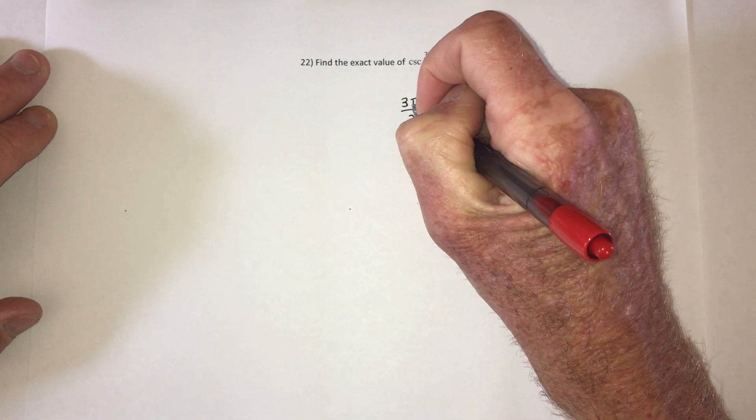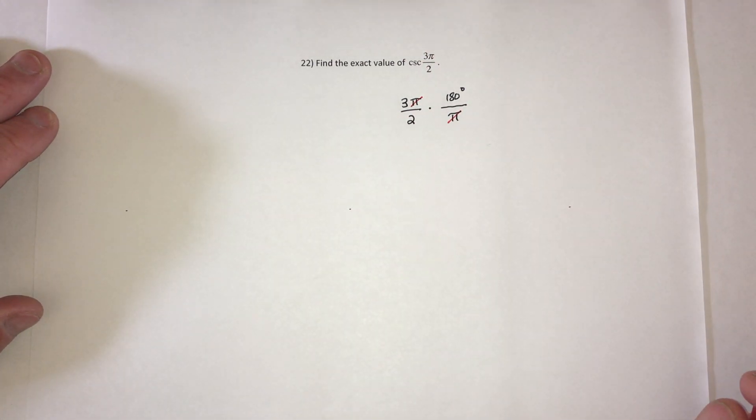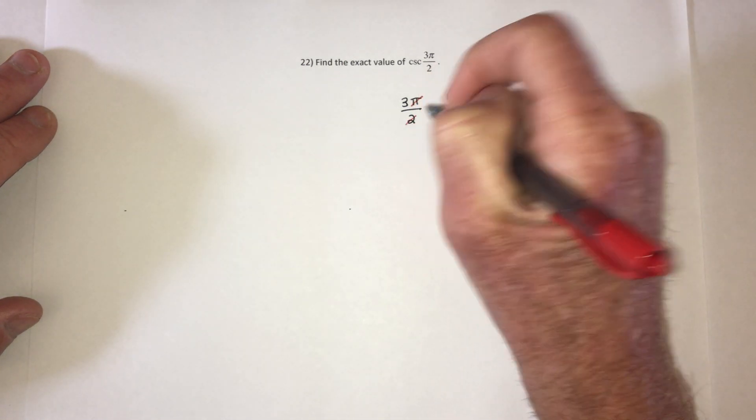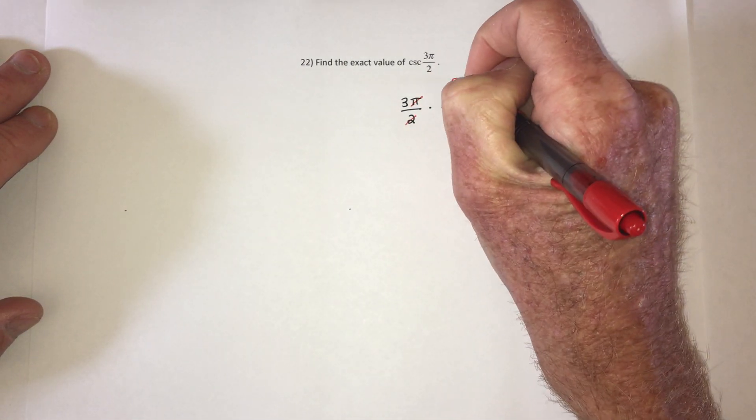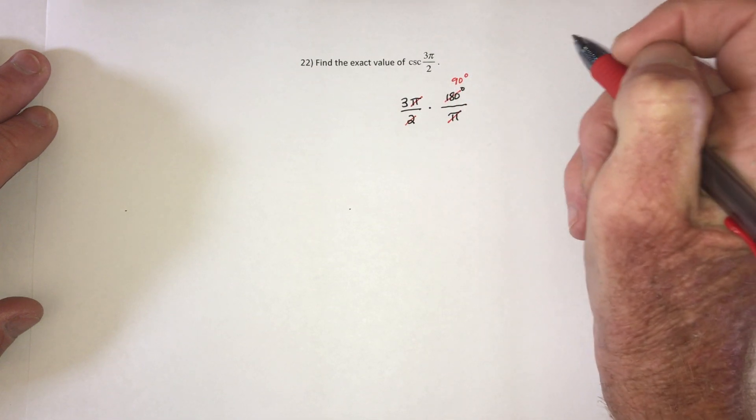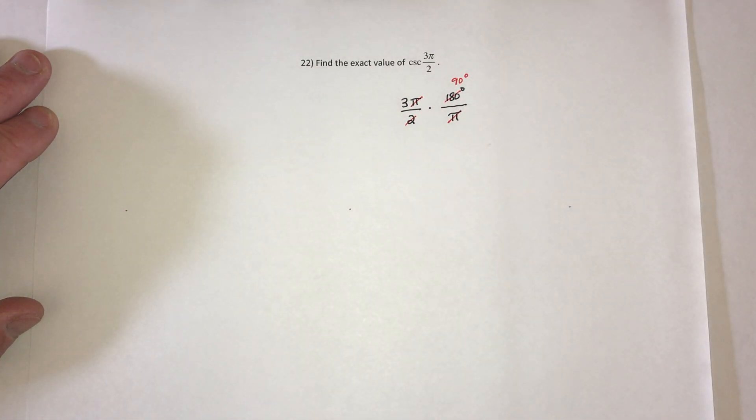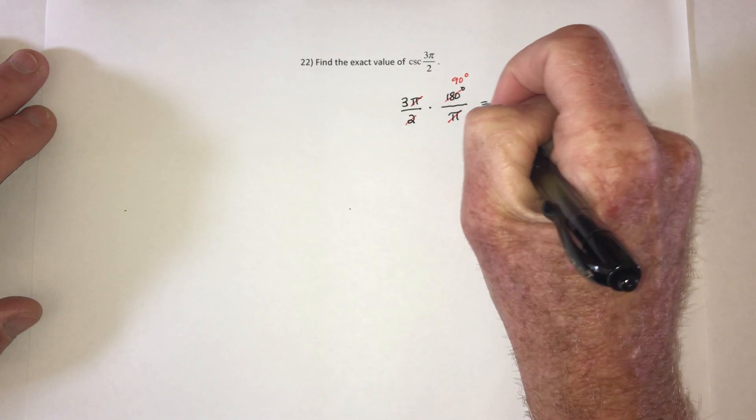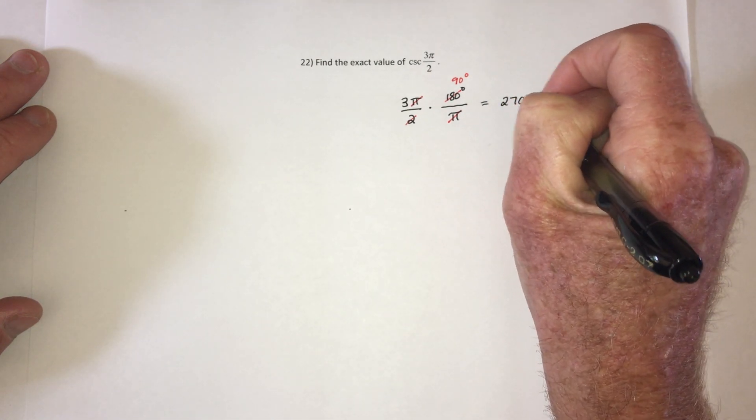The π's will cancel and now it's in degrees. And then to reduce this, a 2 will divide into 180 ninety times, and then multiply 3 times 90, that is 270 degrees.